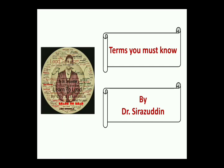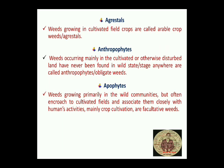Starting with the first term: Agristal. The weeds which are growing in the cultivated field crops are called arable crop weeds, or Agristal. So these weeds are known as Agristal. Now there are two more terms to discuss.